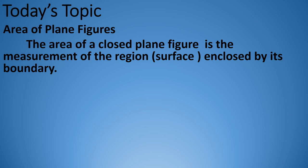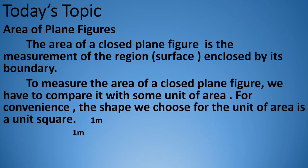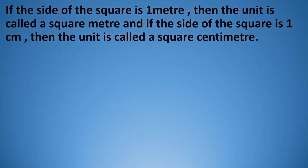To measure the area of a closed plane figure, we have to compare it with some unit of area. For convenience, the shape we choose for the unit of area is a unit square. We find out area in unit squares. This is one square of one meter by one meter. If the side of a square is one meter, the unit is called a square meter. If the side of a square is one centimeter, the unit is called a square centimeter.